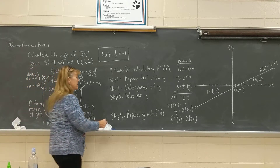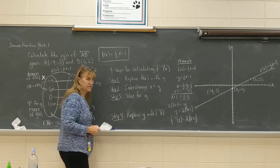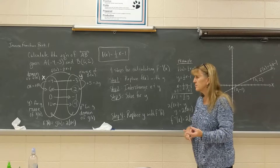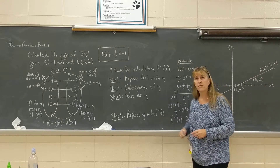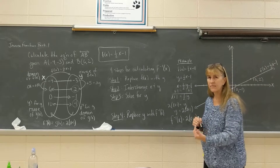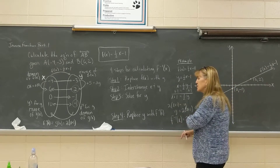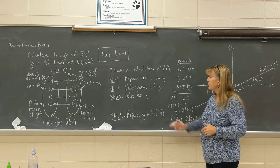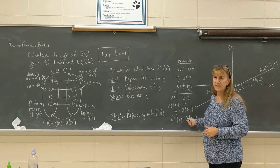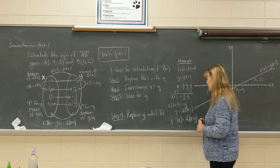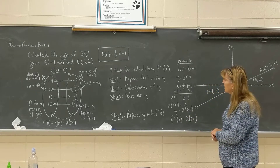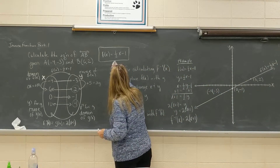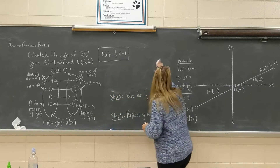I'm going to ask you to give me these four steps on your quiz, with four lines: Step 1, replace f of x with y. Step 2, interchange x and y. Step 3, solve for y. Step 4, replace y with f inverse of x. The very next question on your quiz will say: calculate the inverse function for f of x equals such-and-such. If you've written the four steps above, you'd be hard-pressed not to get full credit. This is how we calculate an inverse function.